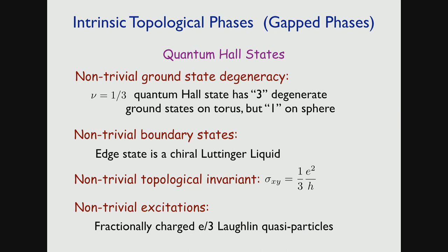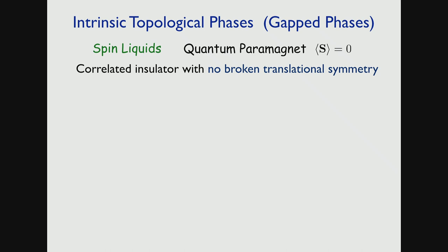I'll switch gear and explain why quantum spin liquid phases may have similar properties to the fractional quantum Hall state. Quantum spin liquid is another example of an intrinsic topological phase. By quantum spin liquid we generally mean a quantum paramagnet: the expectation value of the total spin with respect to the ground state is zero, so there is no magnetic order and spin rotation symmetry is not broken. We're also talking about a correlated insulator with no broken translational symmetry — that's why it's called a liquid.